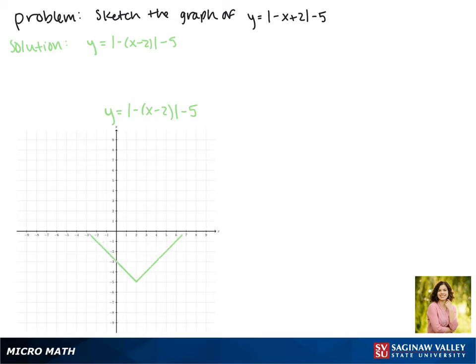So that now our vertex passes through the point 2, negative 5. And this is the graph of our function.